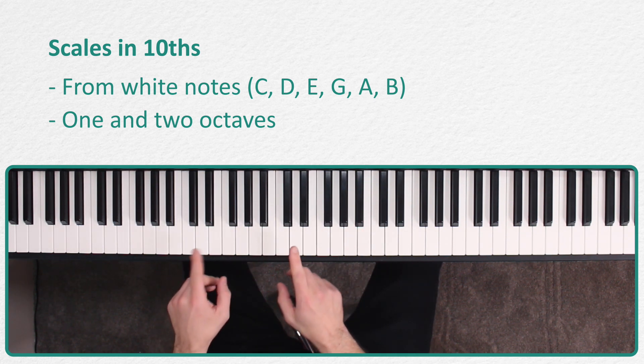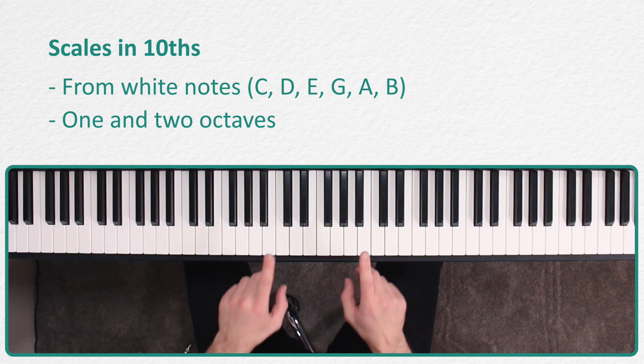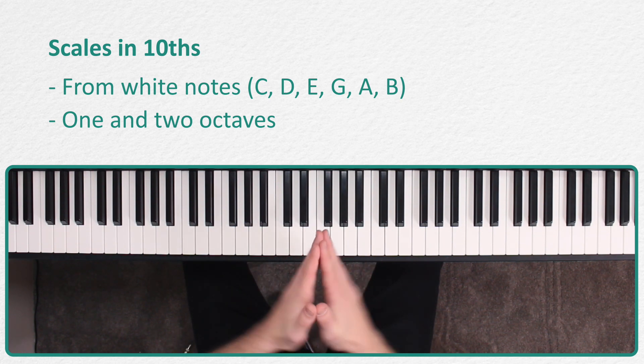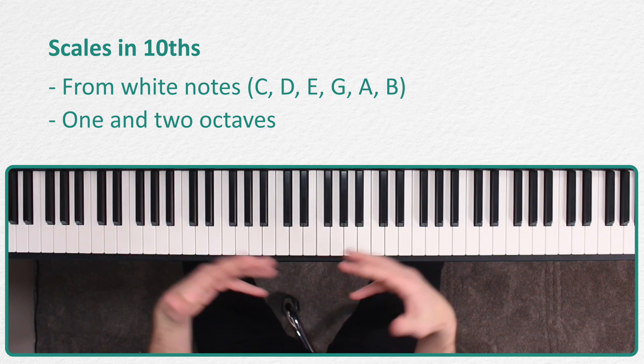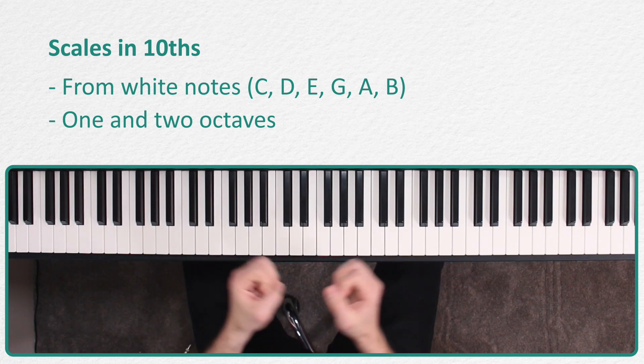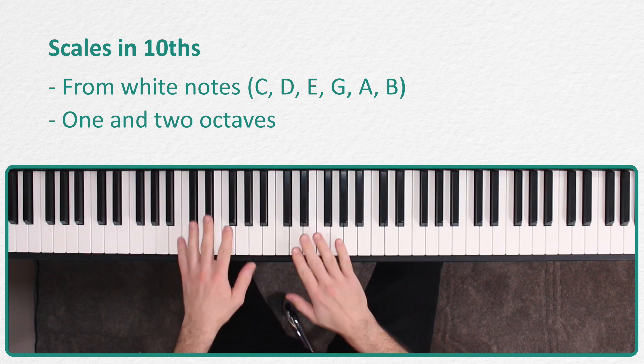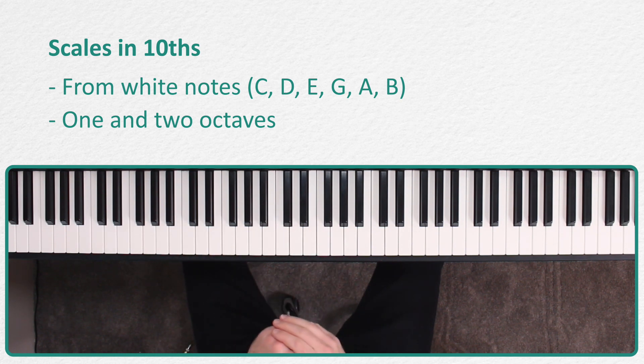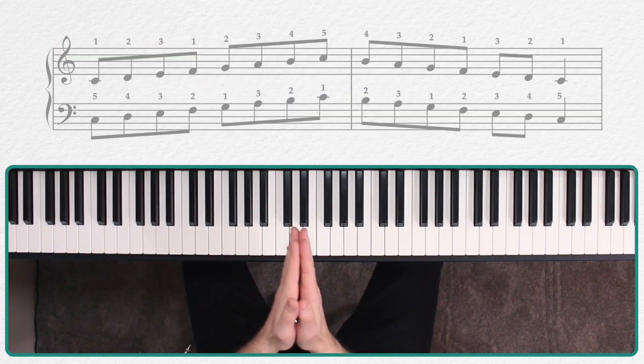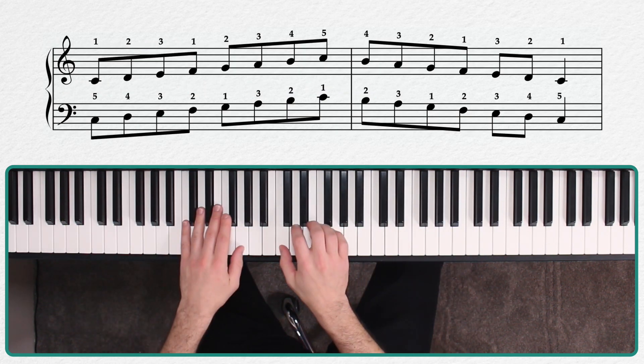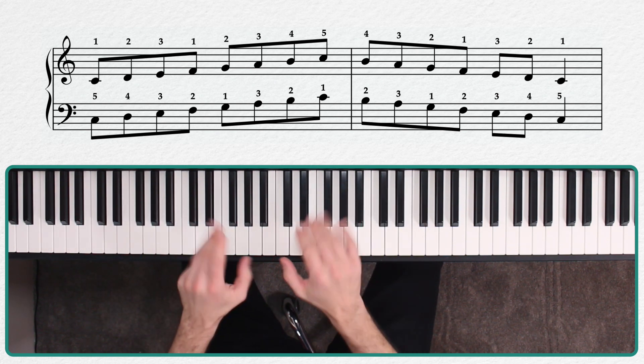And what we're going to use for this lesson are the white note scales, that is the major scales that are starting on C, D, E, F, G, A, and B. So those are what we're going to use. You could of course do this for other things, but just for the sake of keeping the lesson somewhat efficient, we're just going to show you with those. And we of course are going to start with our wonderful C major scale, which if you'll remember looks and sounds like this in its most basic form.